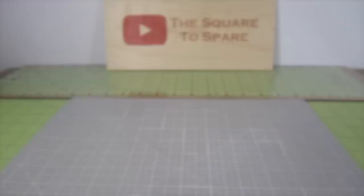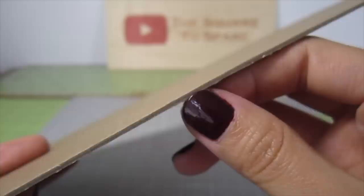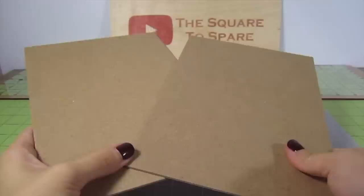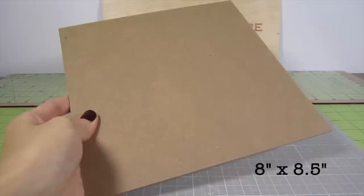Next, we'll need the walls. I grab a chipboard sheet which is kind of like very thick cardstock. Cut out a 6 inch by 8.5 inch rectangle for the sidewall. We'll need 2 of these for the 2 sidewalls. Before we glue these in place, we also need a front wall. Cut out an 8 inch by 8.5 inch rectangle from more chipboard.